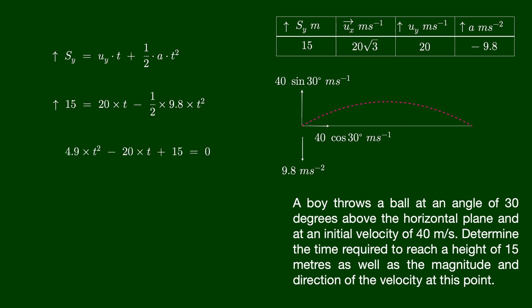This is a quadratic equation with two possible solutions for time. These two values correspond to the displacement of the ball as it ascends and descends. The velocity at these two moments in time must then be determined.